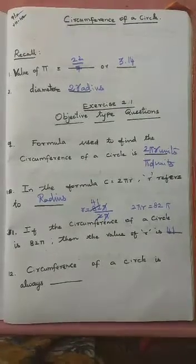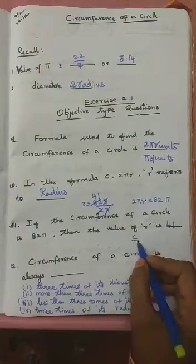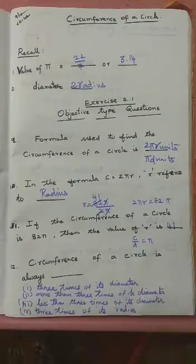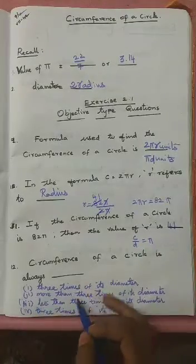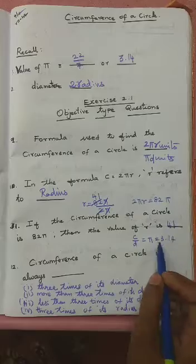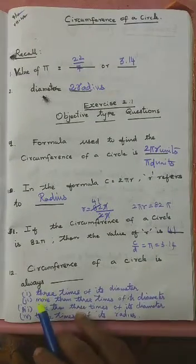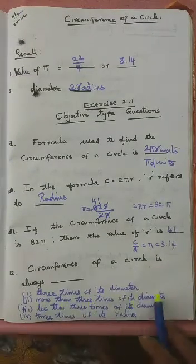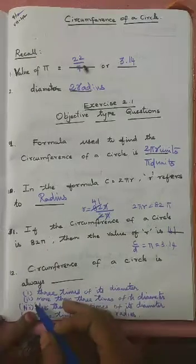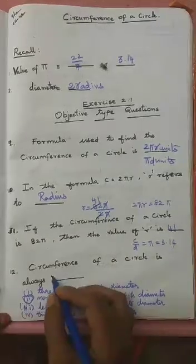For the 12th sum: we know that circumference divided by diameter equals pi, and pi is 3.14, which is more than 3. So the circumference is more than 3 times its diameter. That is the answer — more than 3 times of its diameter.